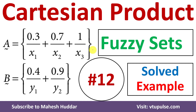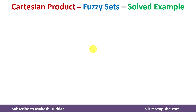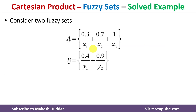Welcome back. In this video I will discuss how to perform cartesian product on given fuzzy sets with the help of a simple solved example. We have been given two fuzzy sets A and B. Fuzzy set A contains three members x1, x2, x3 with membership values 0.3, 0.7, and 1 respectively. Fuzzy set B contains two elements y1 and y2 with membership values 0.4 and 0.9 respectively.